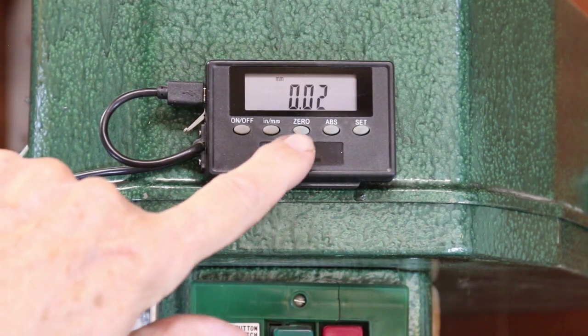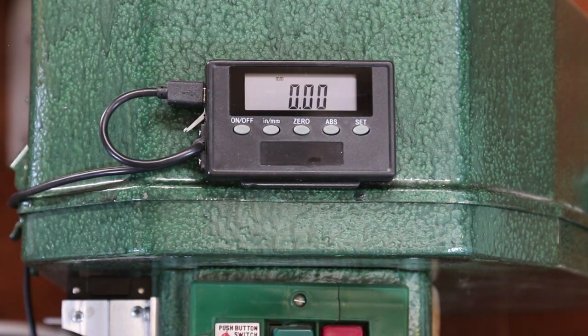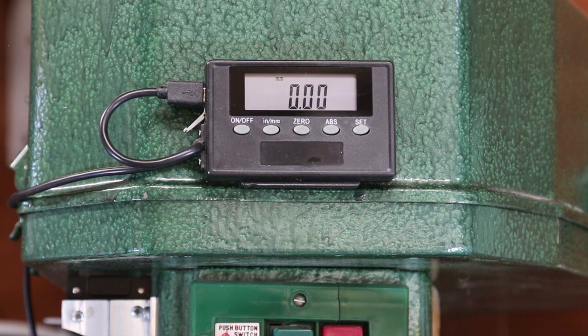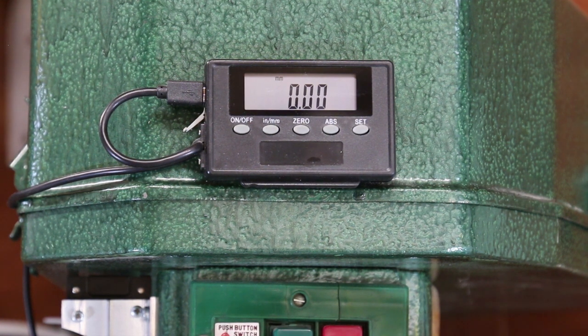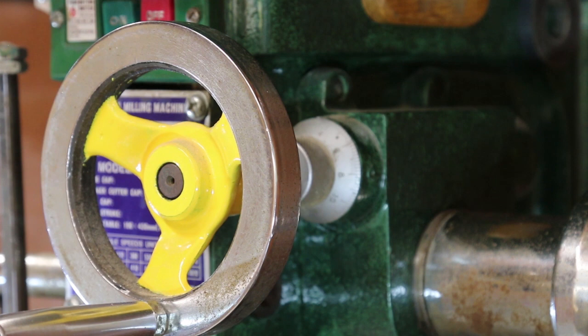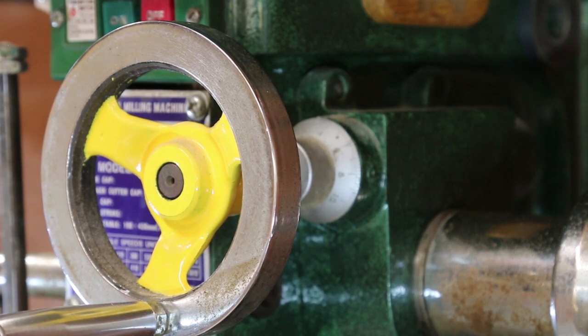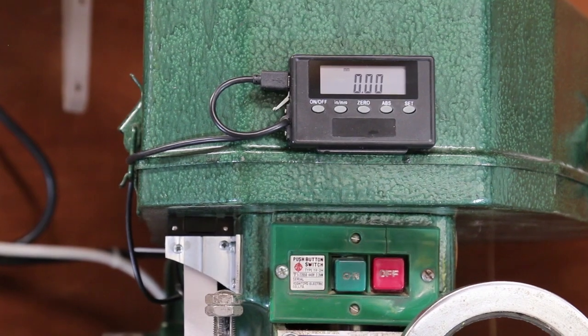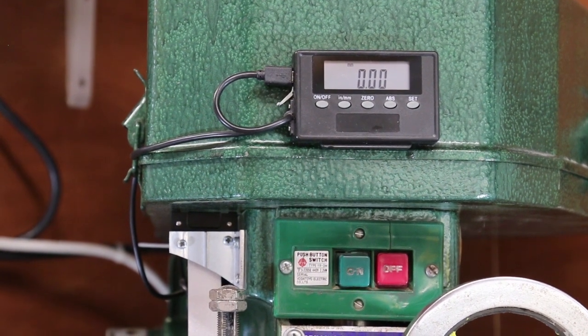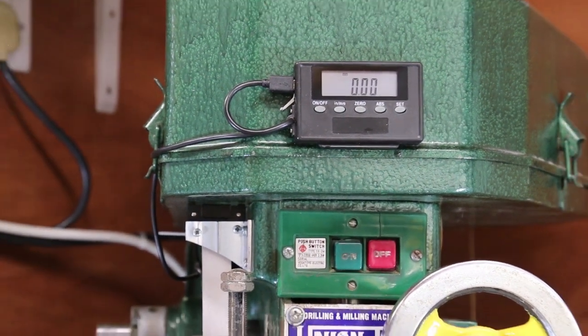The count is easily zeroed and will retain its readings between power offs. Because of the way the drive is connected you can never really rely on the z-axis scale mounted on the front of the machine. This has proved to be very accurate.